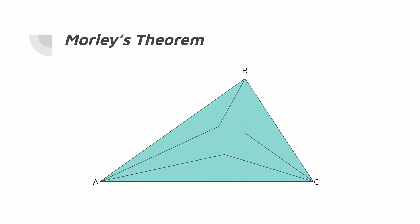Draw lines between the three points to create a triangle. Morley's Theorem states that this triangle that we created is always equilateral, no matter what triangle ABC looks like.